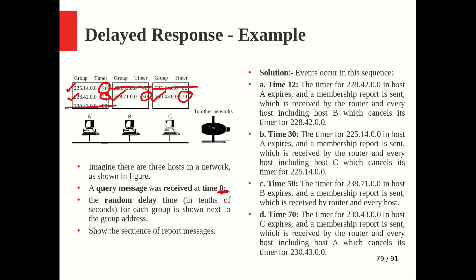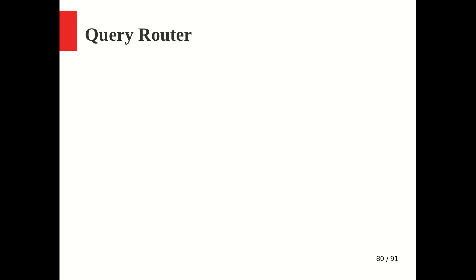This demonstrates the concept of delayed response using a randomly set timer. Without this mechanism, the network would generate seven membership reports — three from host A, two from B, two from C. With delayed response, only four reports were sent, saving three duplicate transmissions. In a larger network, the savings would be significantly greater, making this a very effective optimization in the IGMP protocol.